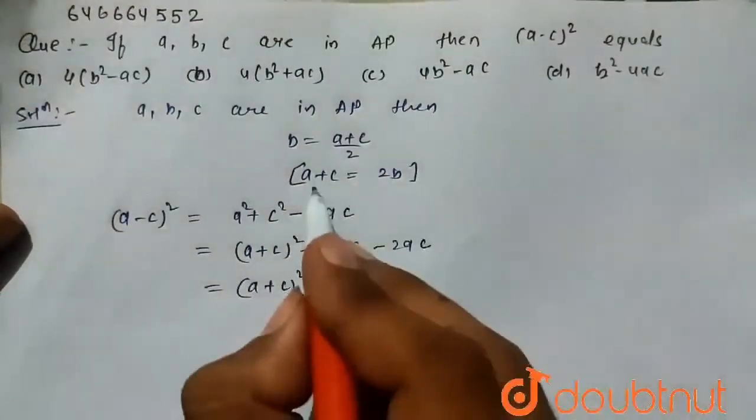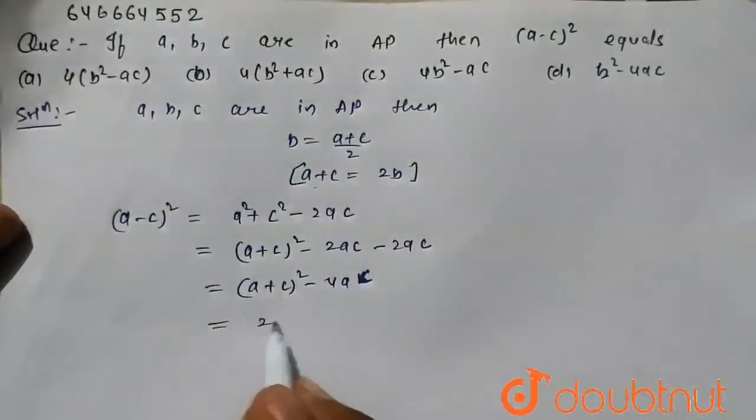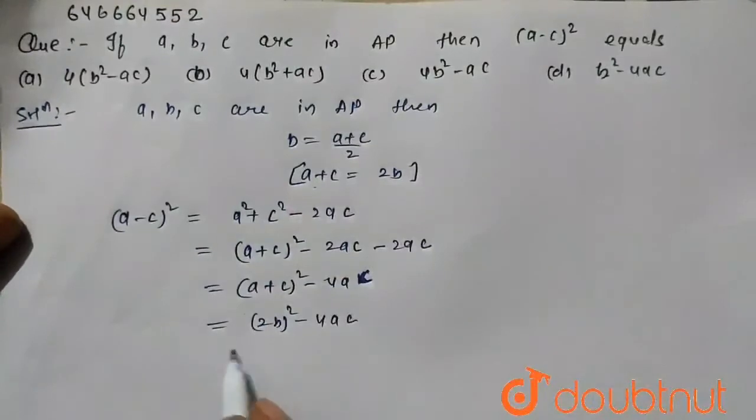Here putting the value of a plus c equals 2b from given condition, we can write it as 2b whole square minus 4ac. So 2 into b square equals 4b square minus 4ac.